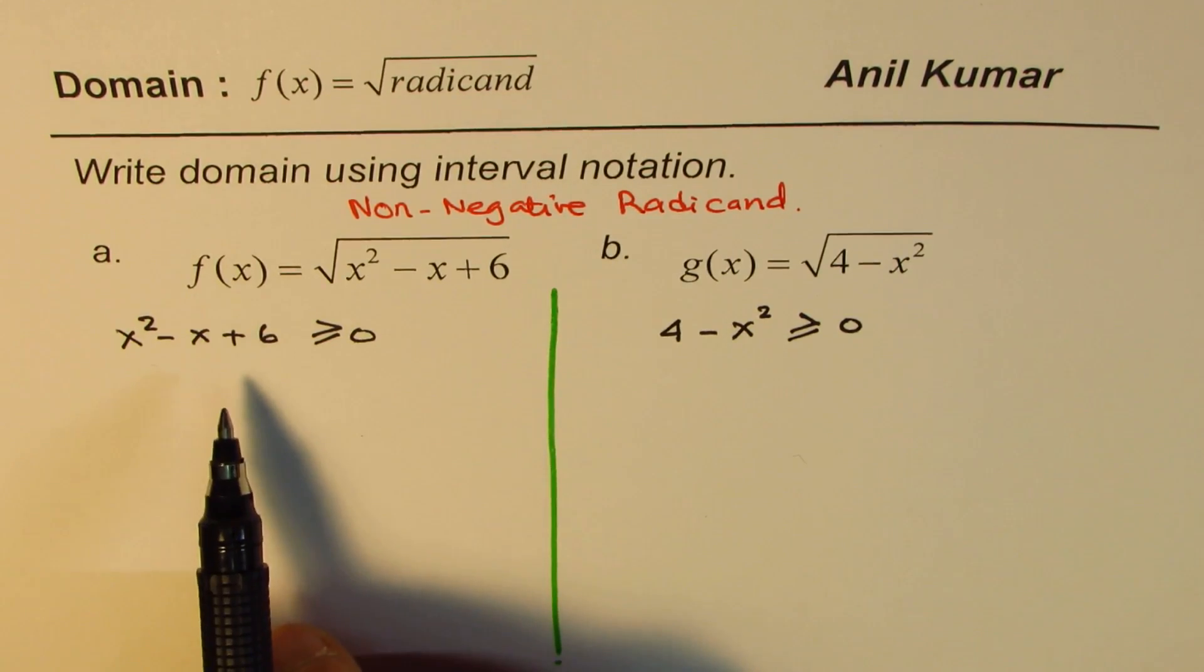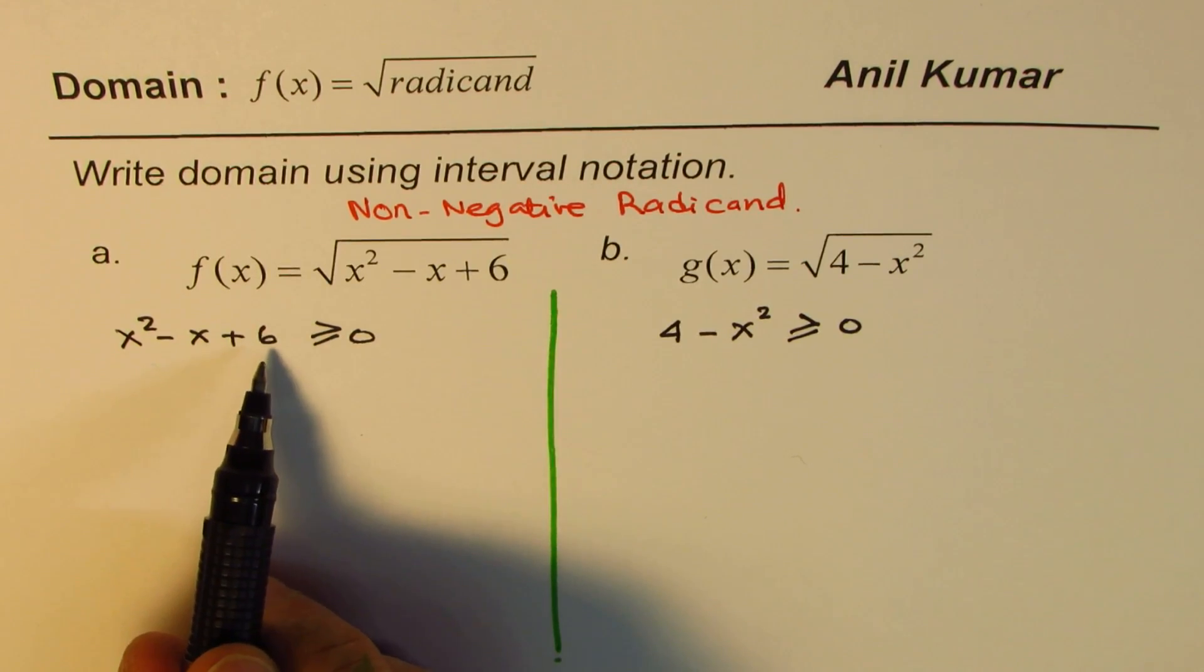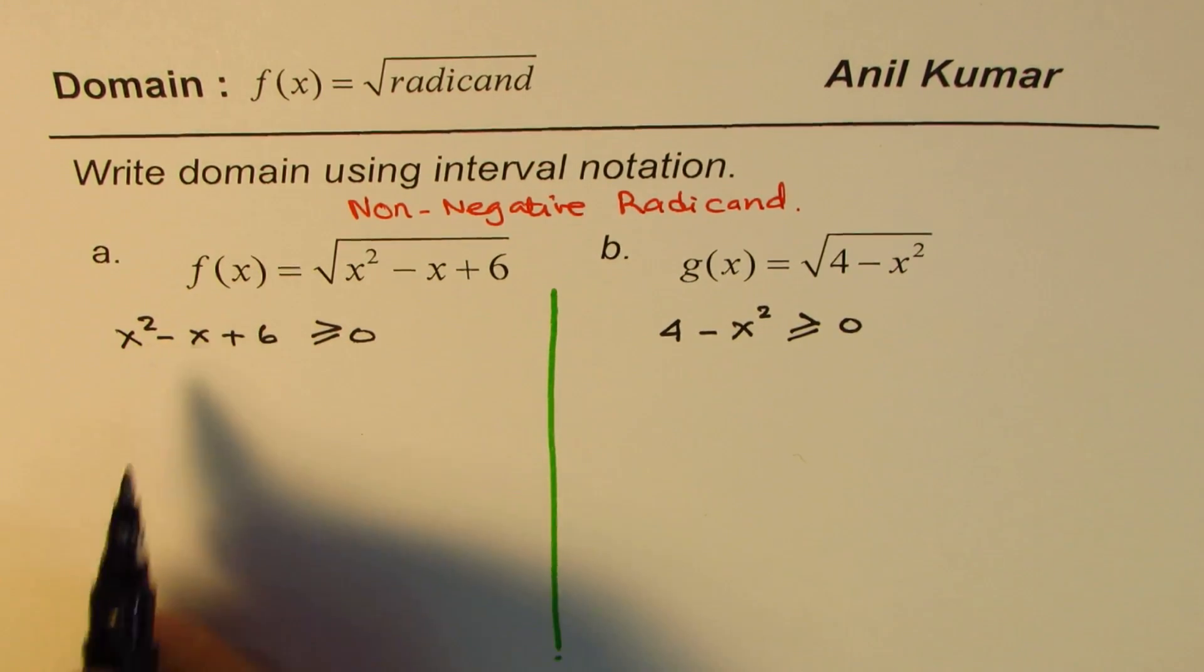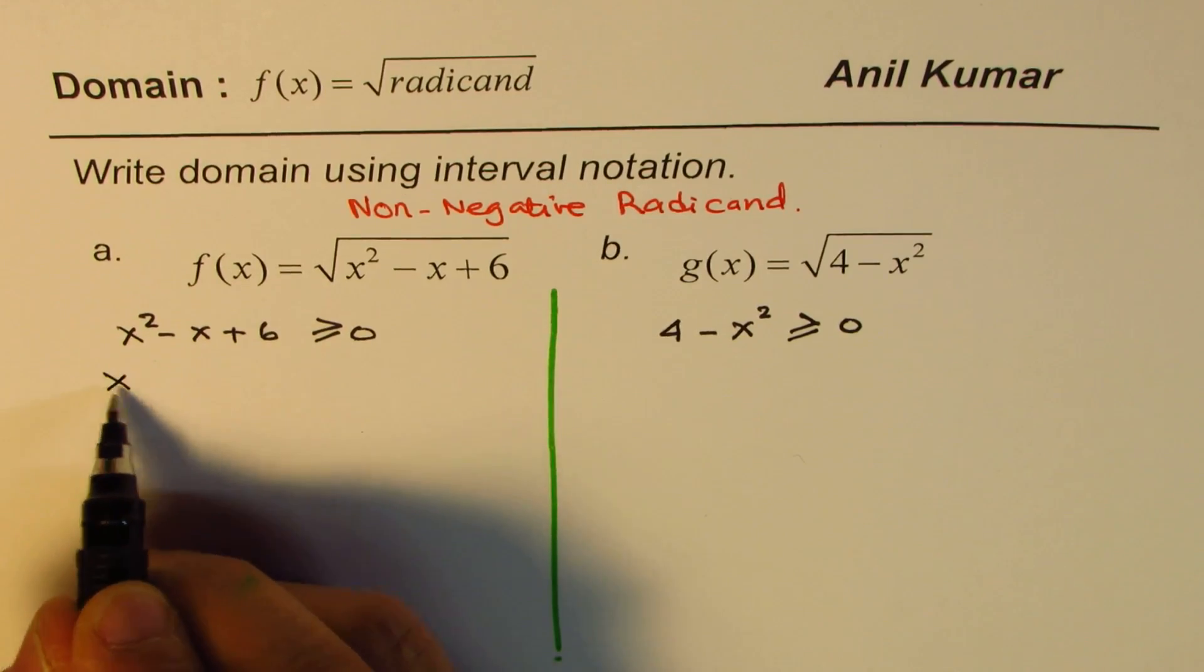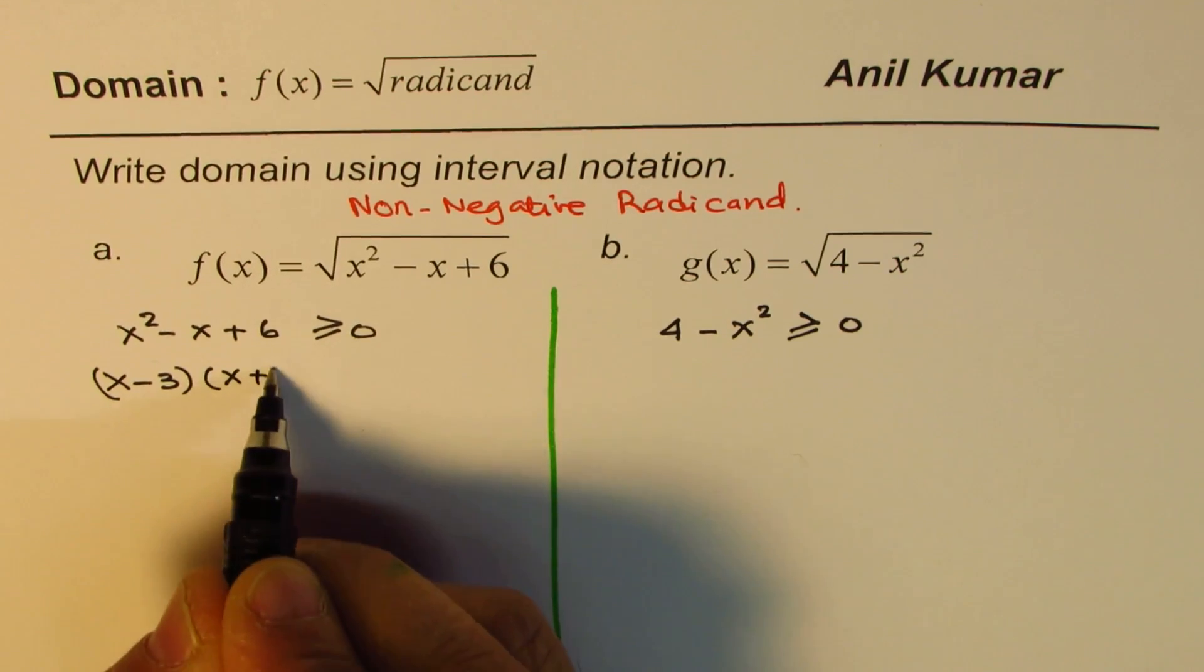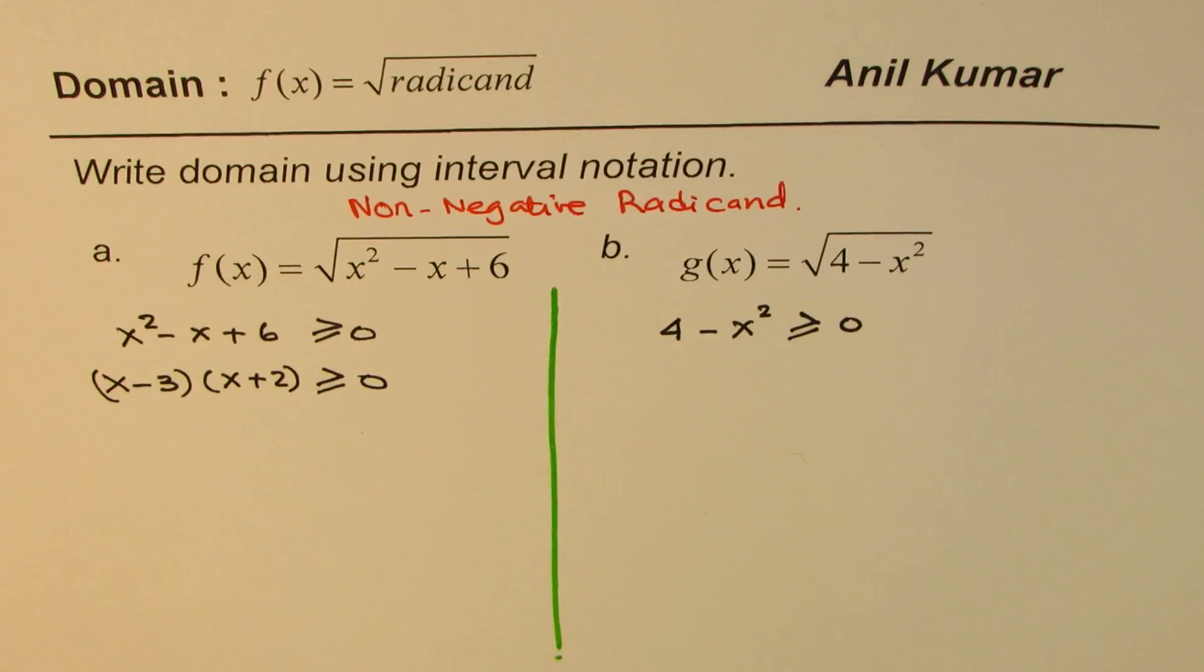Now, to solve such quadratic equations, factoring is a good technique. The other way is you could use a graph. In this case, it's easier to factor. For 6, we need product of two numbers, 3 and 2, and negative x is their sum. So we could write this as x minus 3 times x plus 2. So that is in factored form.